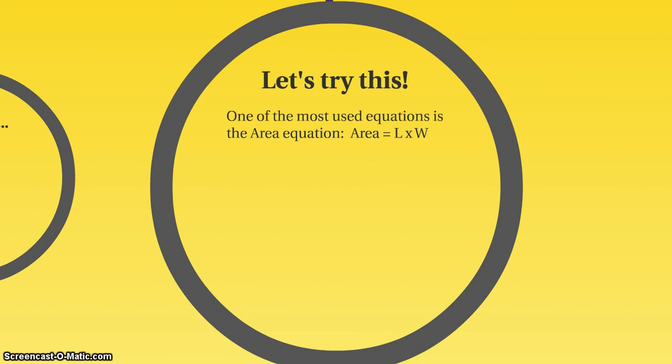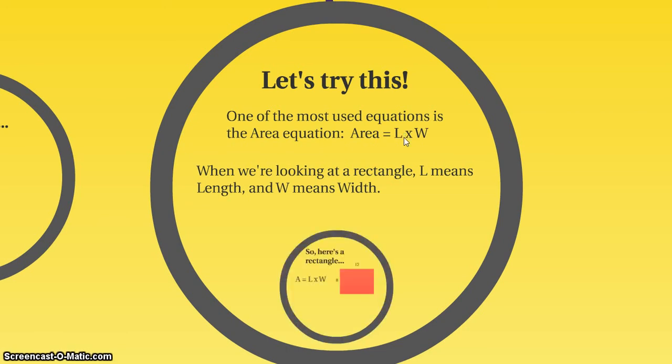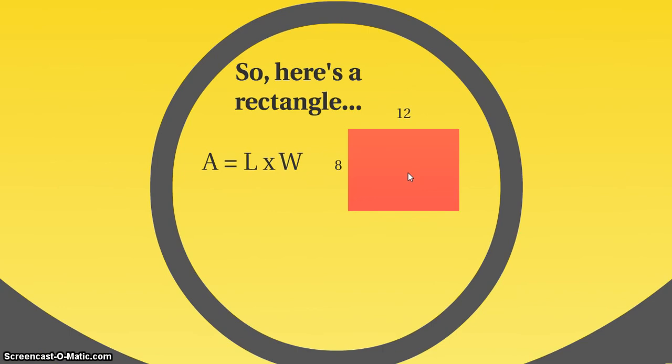Let's look at an example for this. So one of the most used equations is the area equation, which states that area equals L times W. Or you might see it without the multiplication mark, you might just see that L and that W right up next to each other. So when we're looking at a rectangle, the L means the length, and W means the width. So this is often information that they're going to give us. So we can plug in the information that they tell us into these L and W variables. Okay, so let's look at a rectangle. Here it is. And we've got our equation here, A equals L times W.